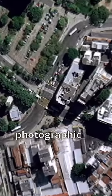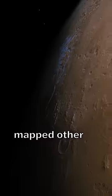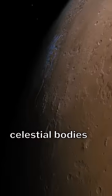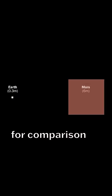State-of-the-art photographic satellites can map areas on Earth with a resolution of 0.3 meters per pixel. We've also mapped other celestial bodies, such as Mars, which we have mapped with a resolution of 6 meters per pixel. For comparison, the ocean maps that cover the entire surface only have a resolution of 5 kilometers per pixel.